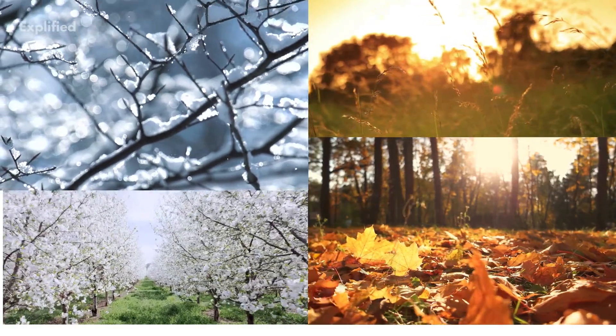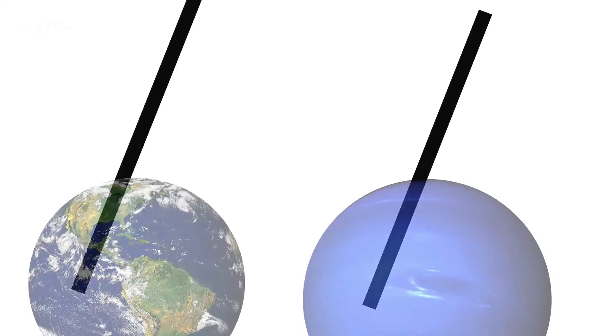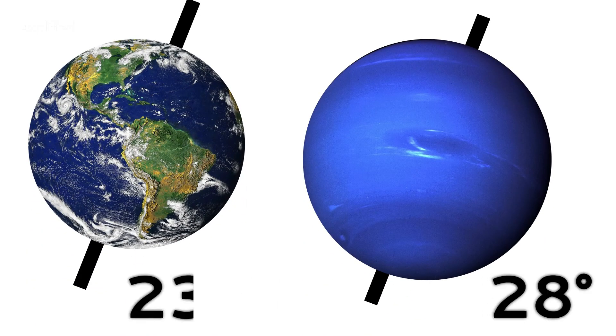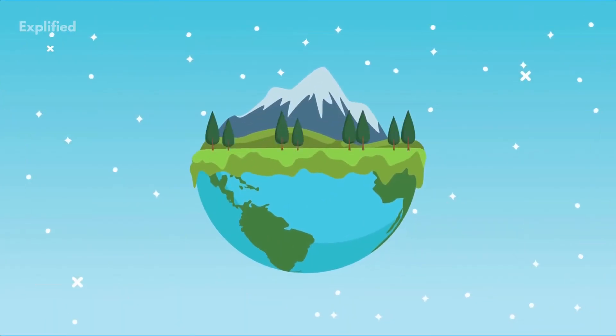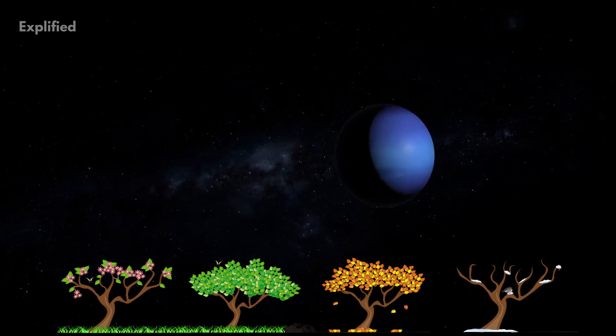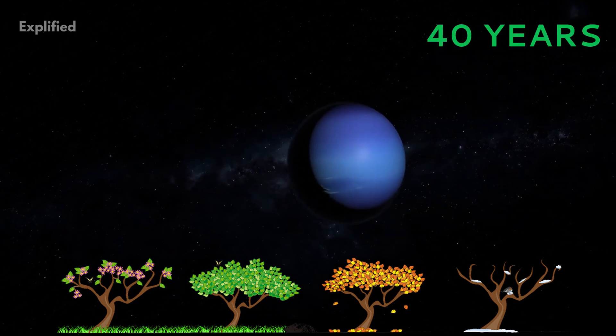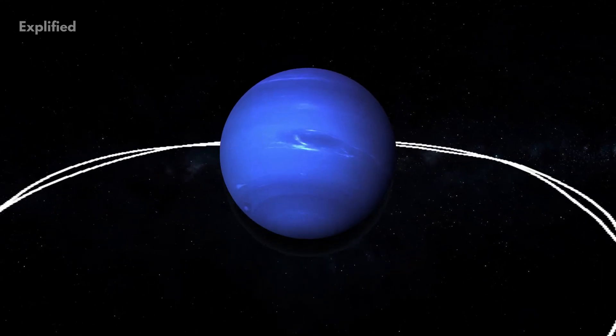Number 8. One season on Neptune lasts 40 years. Neptune's axis is tilted 28 degrees with respect to the plane of its orbit. This means that like Earth, Neptune also experiences four seasons, just that they last for 40 long years due to the extraordinarily long time the planet takes to complete its orbit.